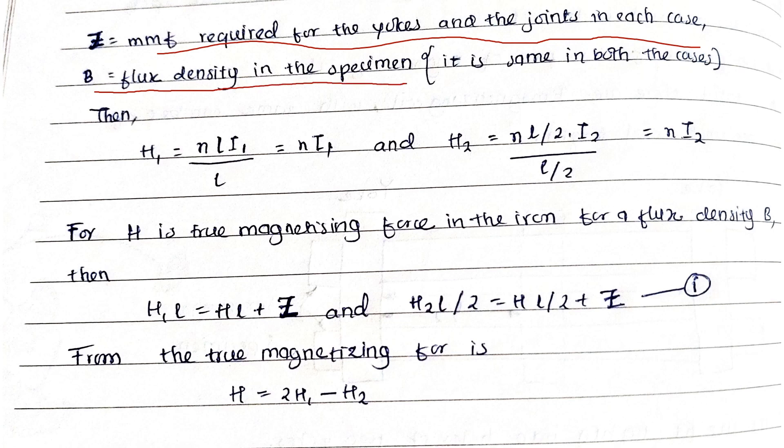Then H₁ = (N × L × I₁)/L = N × I₁, and H₂ = (N × L/2 × I₂)/(L/2) = N × I₂. If H is the magnetizing force in the iron for the flux density, then: